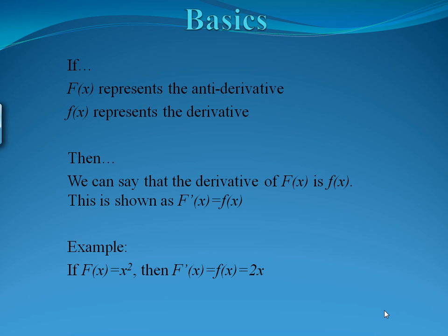Let's start with some terminology. If capital F of x represents the antiderivative and little f of x represents the derivative, then we can say that the derivative of capital F of x is little f of x. This is shown as capital F prime of x equals little f of x. For example, if capital F of x equals x squared, then capital F prime of x, which equals little f of x, is the derivative, which we know is 2x.